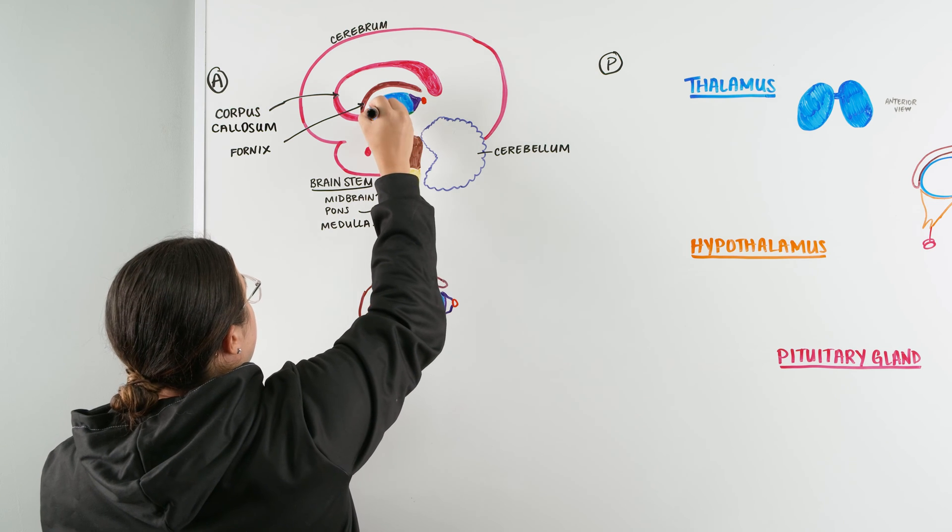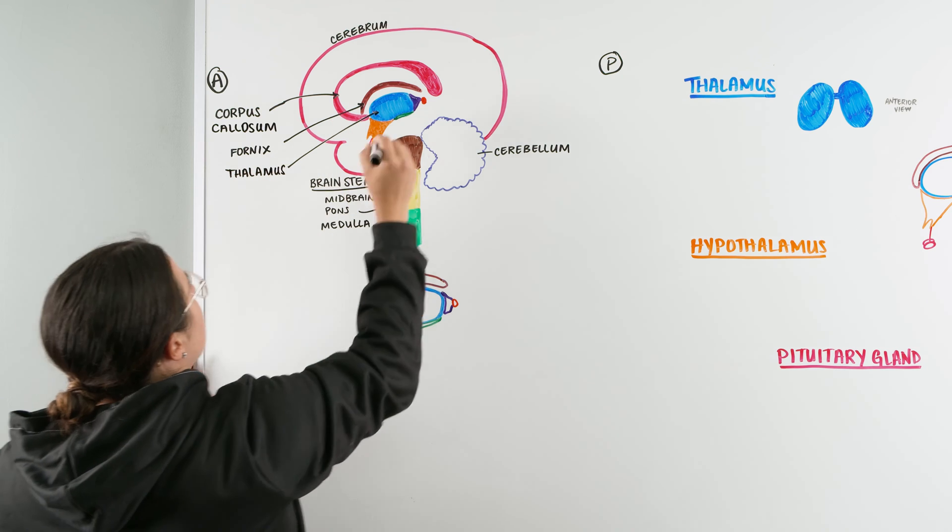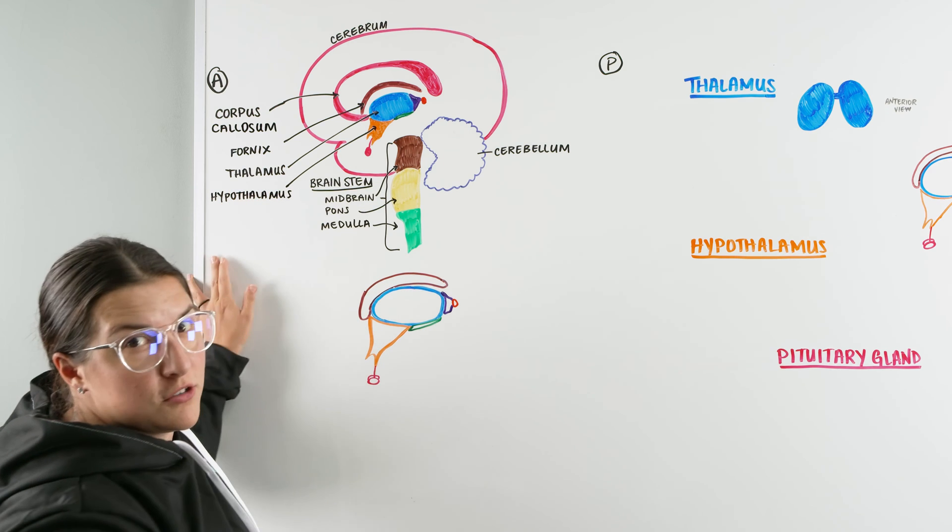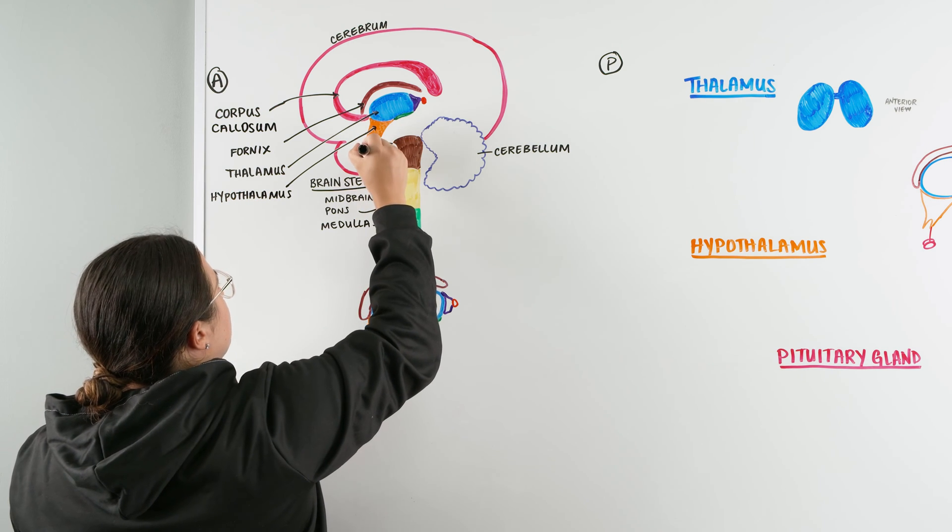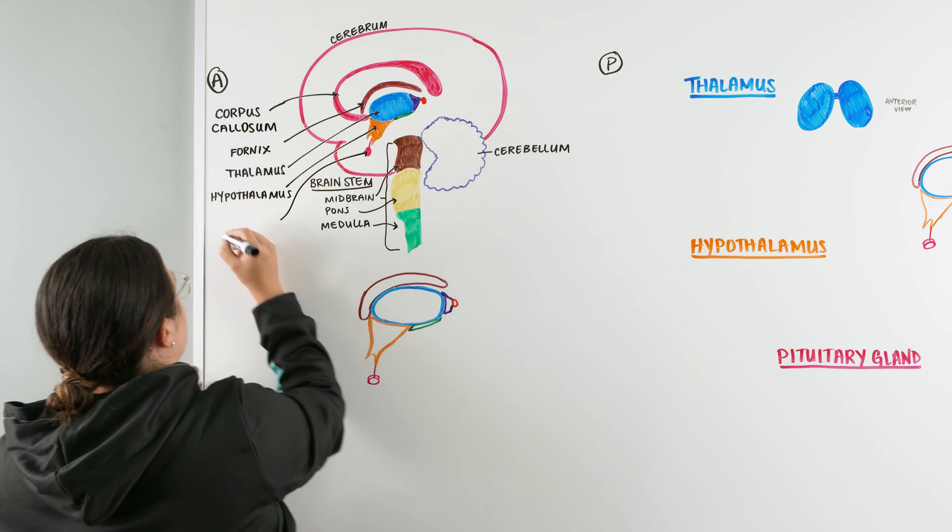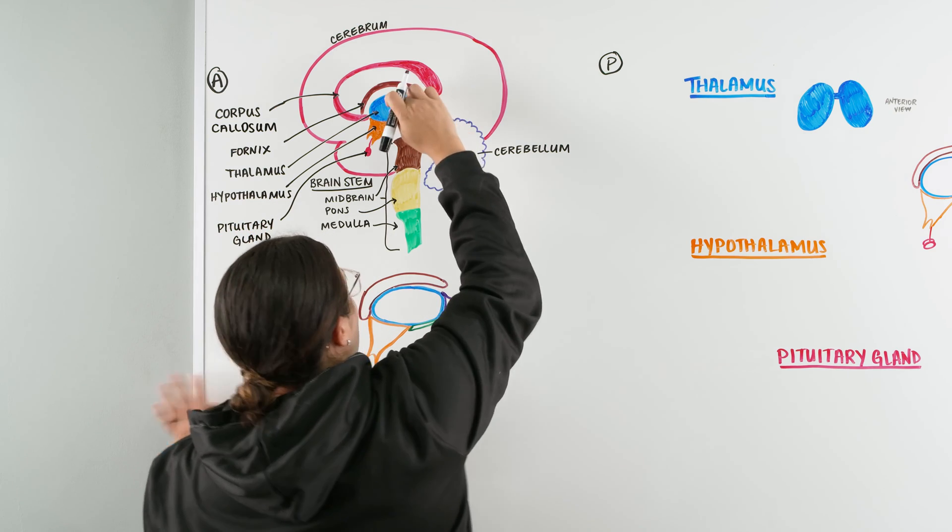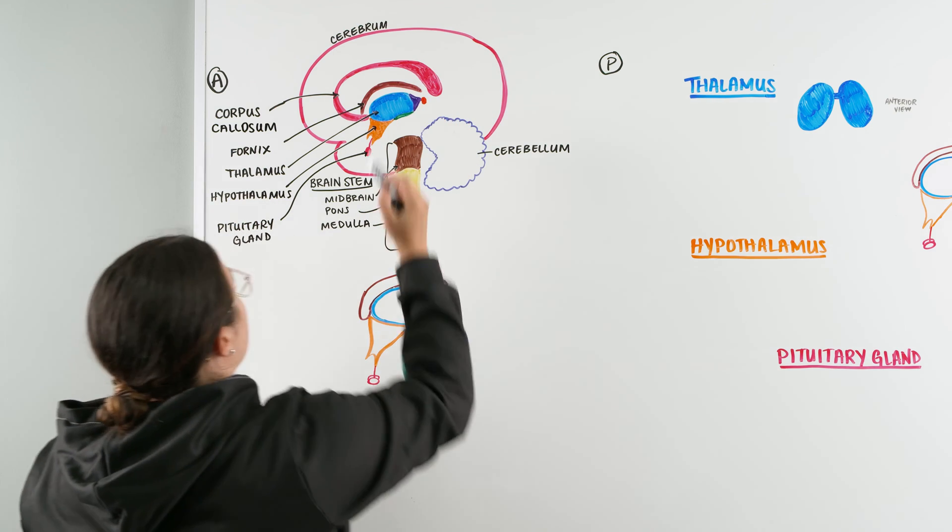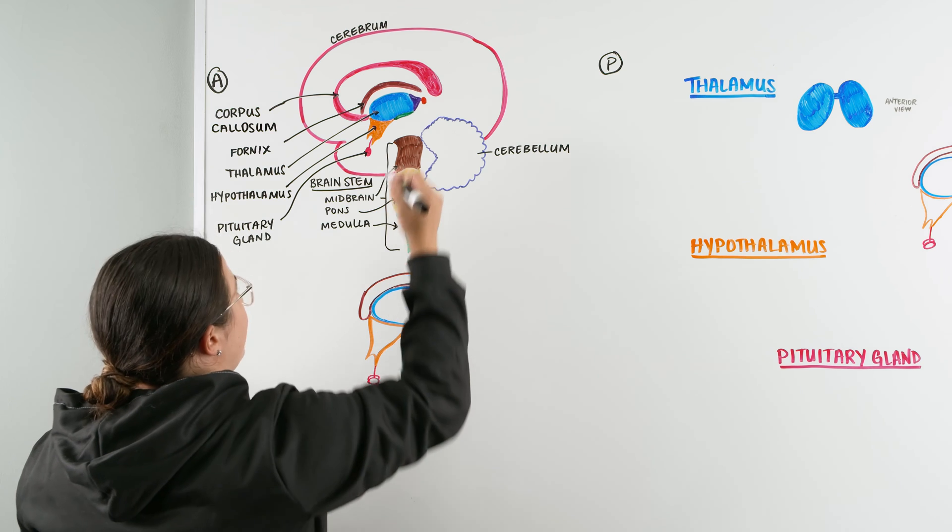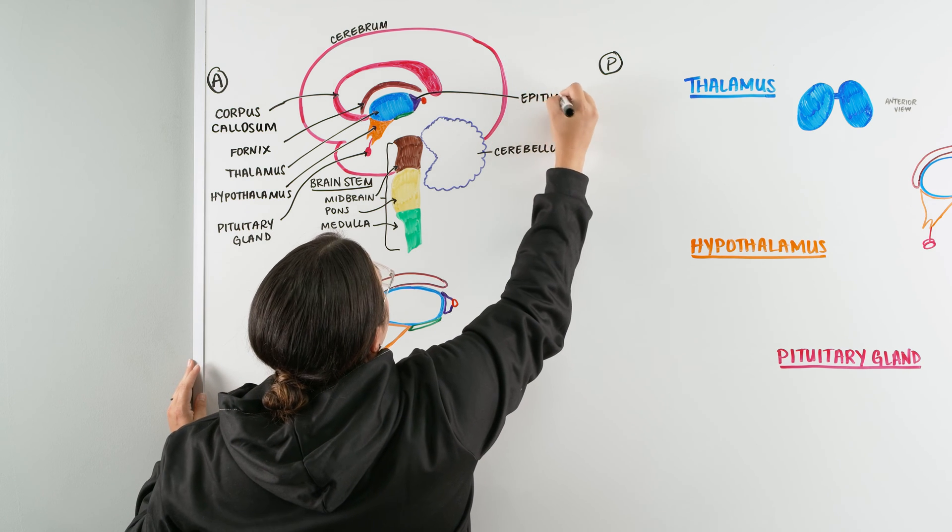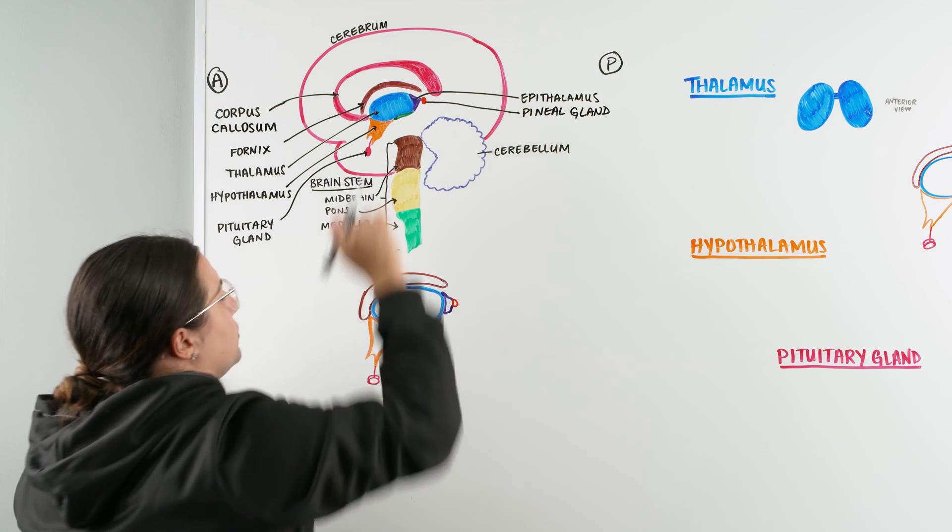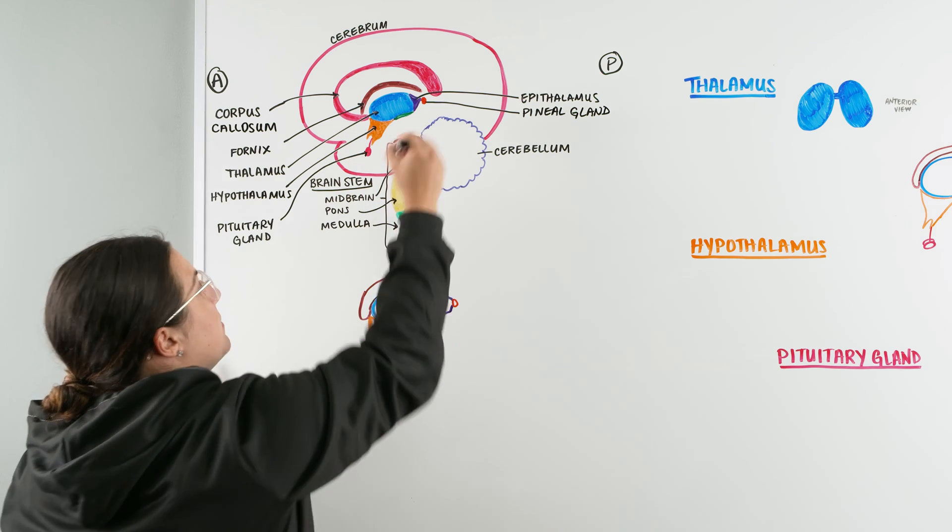So right here, this big blue structure here, we have a thalamus. Underneath it we have our hypothalamus. Okay, so far so good. Hanging off the hypothalamus we have this little gland right here which is our pituitary gland. Back here on the back portion of the thalamus we have something called the epithalamus, and I always picture this as like a hat sitting on the back of the thalamus. So this is our epithalamus. This red structure right here is our pineal gland. And then the last structure we need to identify is this green portion right here, which is our subthalamus.